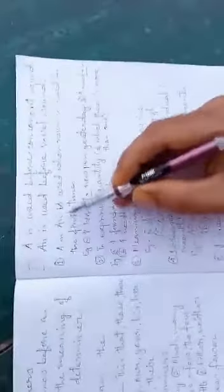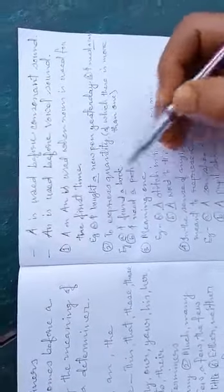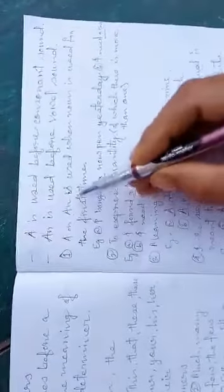Let us come back to our class here. A or an is used when a noun is used for the first time. So when we are using a particular noun for the first time, we normally use a or an if it is singular.